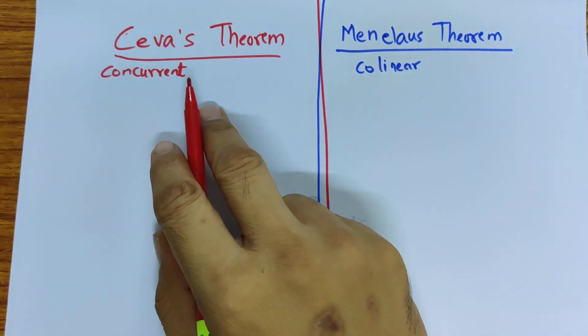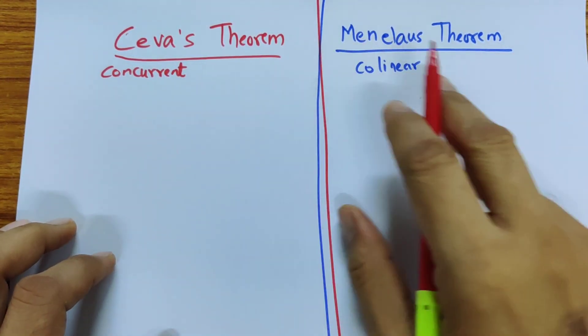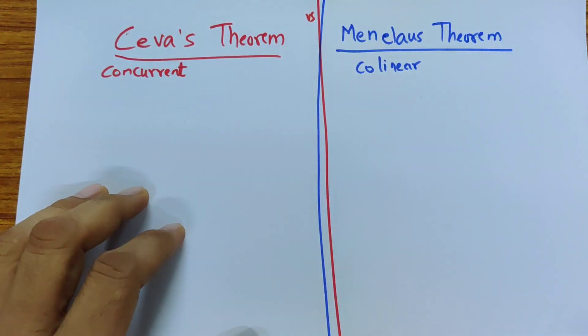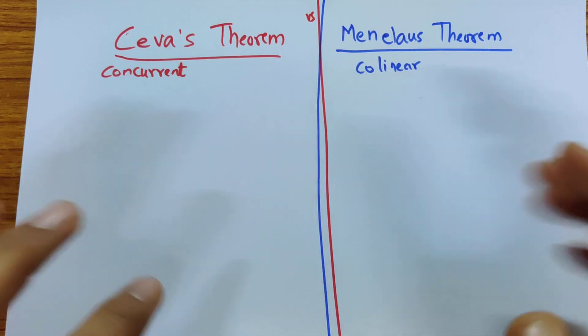In this video we will look at the comparison between Ceva's theorem and Menelaus theorem. Actually to separate them, it's versus. They are not the same. They are not related to each other at all.